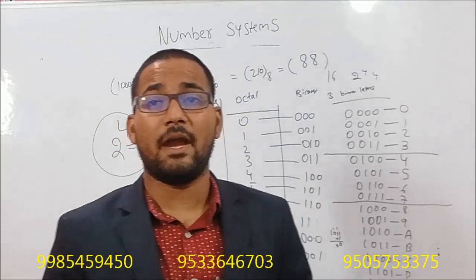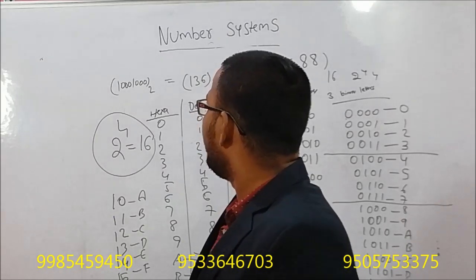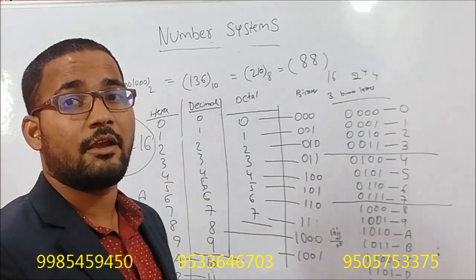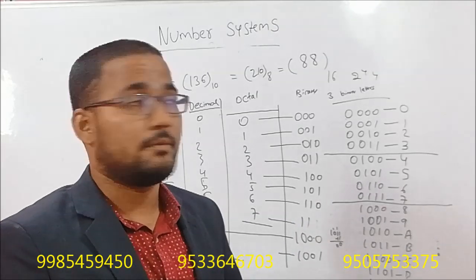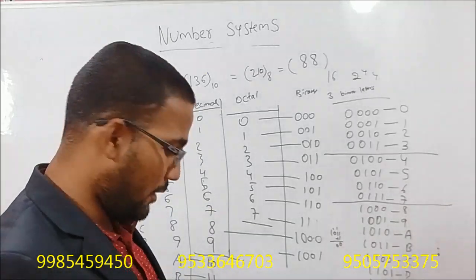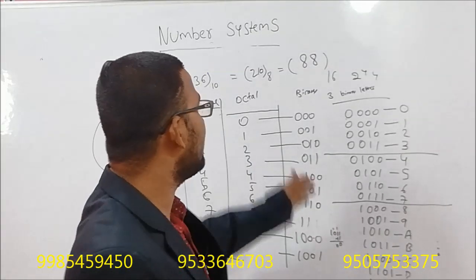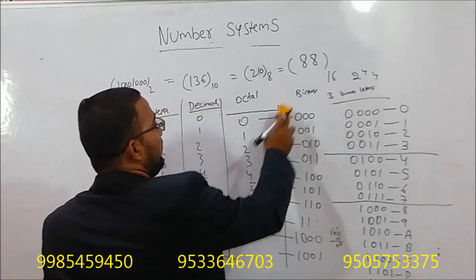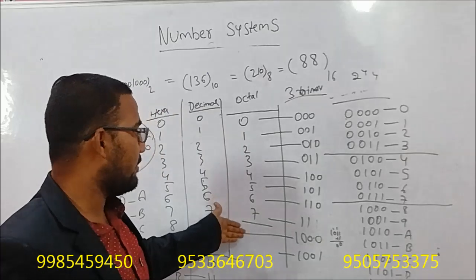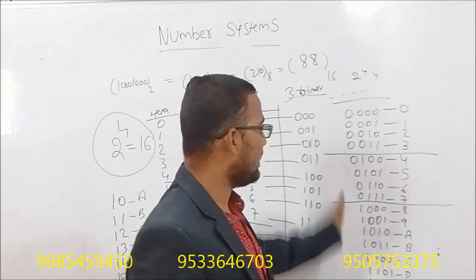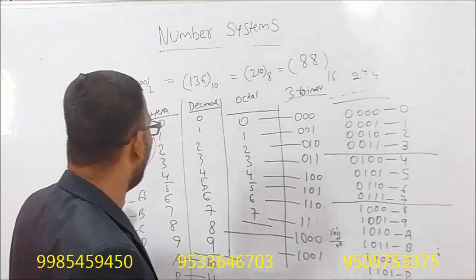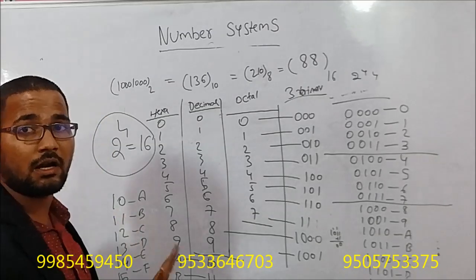We have binary data. We can convert binary numbers to hexadecimal and decimal. Using the table, any binary number can be converted. For octal, we use three binary numbers to represent values 0 to 7. For hexadecimal, we use four binary numbers.